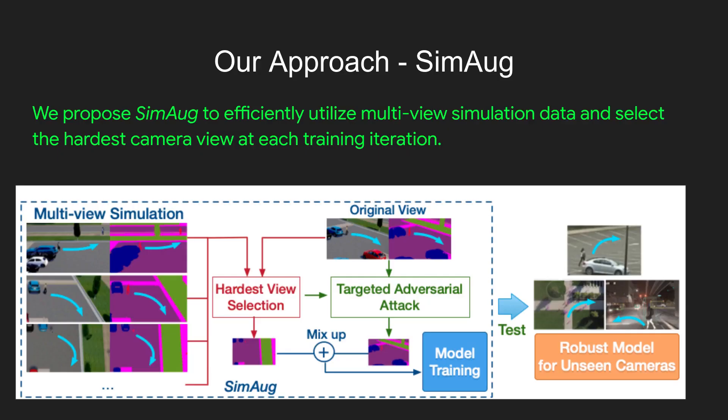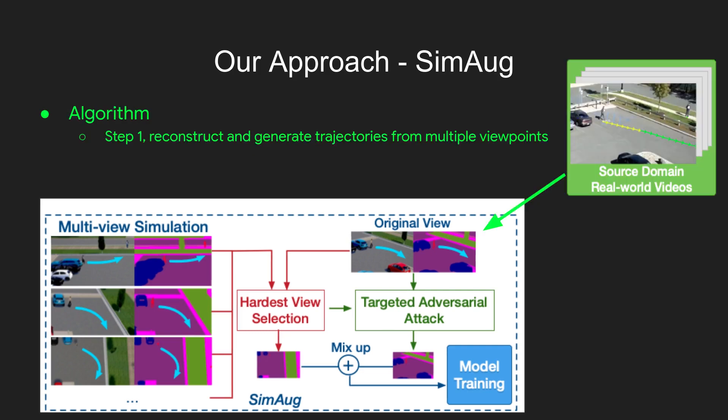We propose SimArc to efficiently utilize multi-view simulation data and select the hardest camera view at each training iteration. Here I'm going to present our algorithm. For step one, we reconstruct and generate trajectories from multiple viewpoints. As you can see on the right, that's derived from the real-world videos — we reconstruct the real-world scenario in 3D simulation and then generate trajectories from multiple viewpoints.